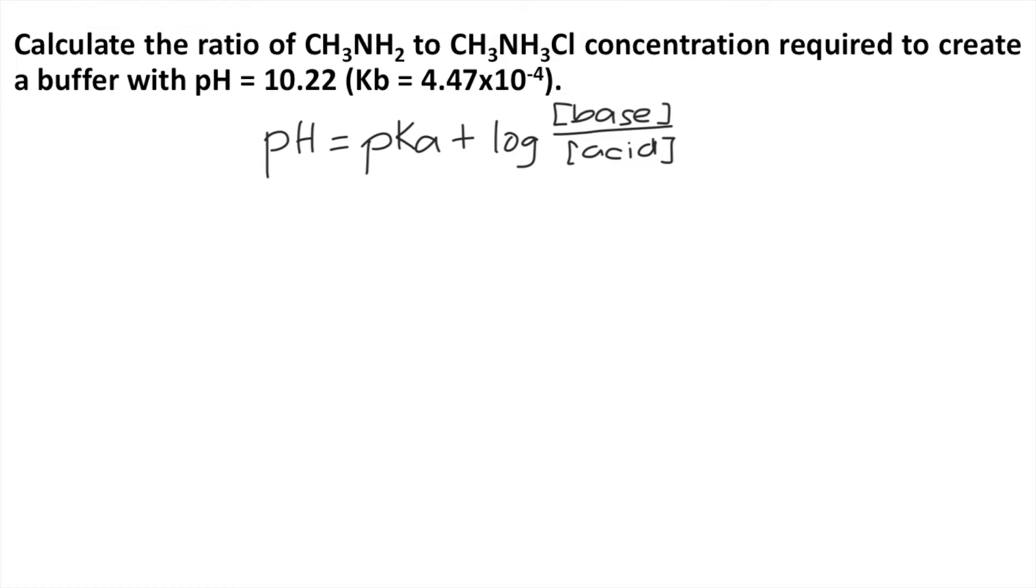In the problem, our base is CH3NH2, which is methylamine, and our acid is the other substance, CH3NH3Cl. So basically, the problem is asking for the ratio of base to acid. We are solving for this base over acid ratio.